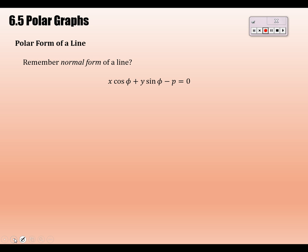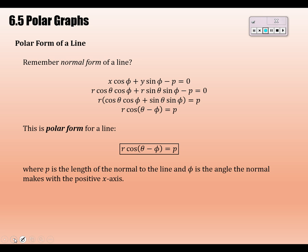This is a little derivation. X and Y are R cosine theta and R sine theta. So I'm going to make that replacement. And now it's in polar form. I'm going to move the P over to the right side and factor out an R on the left. And then what is in the parentheses? What can you see? Yeah, it's the cosine difference formula for theta and phi. So there we have it. The polar form of the line is R cosine theta minus phi equals P. Where P and phi are the things I just said. P is the length of the normal to the line and phi is the angle with the positive x-axis.